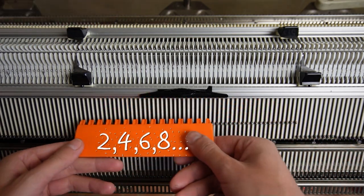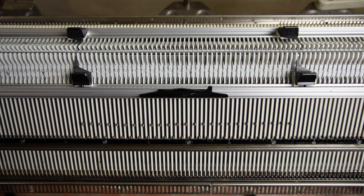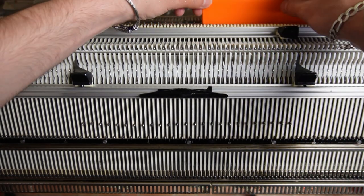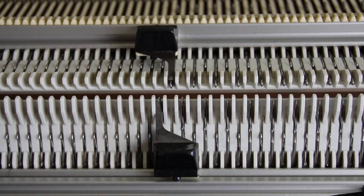Use the orange ruler to arrange the needles on both beds in one to one division and put the edge springs on the last working needles. It should look like this.